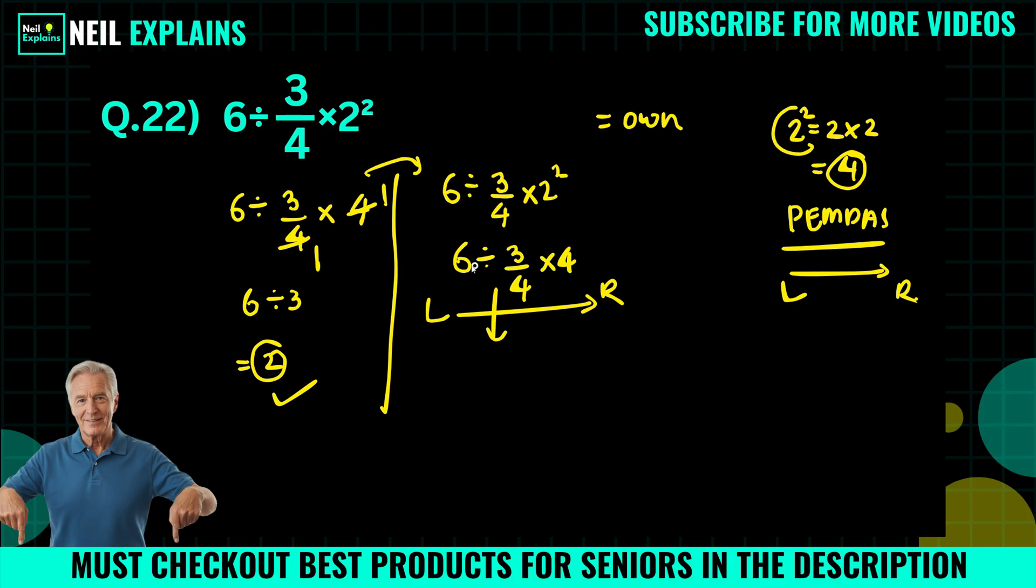So we will operate in this way, left to right. First we will operate this 6 divided by 3/4 to simplify. We will use here KCF: keep, change, flip. We will keep 6 as it is, this division will be changed to multiplication, and 3/4 will become 4/3. Now again we will rewrite here.